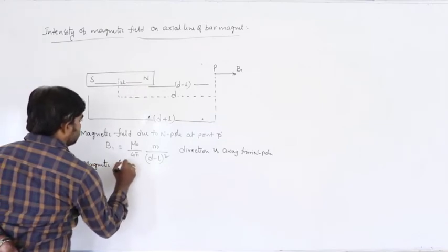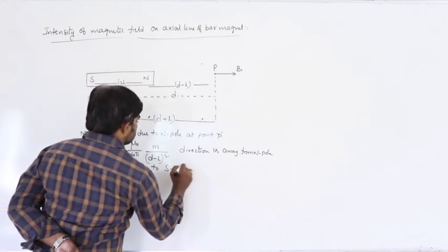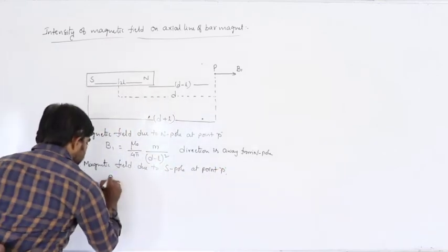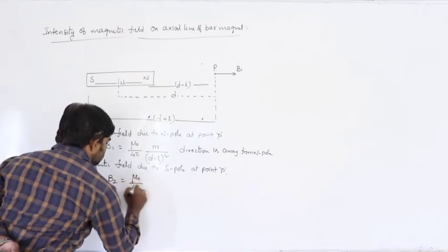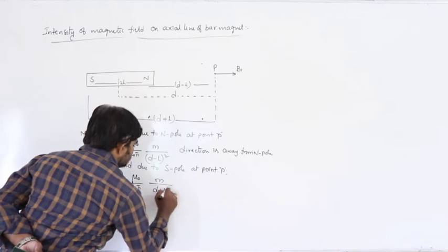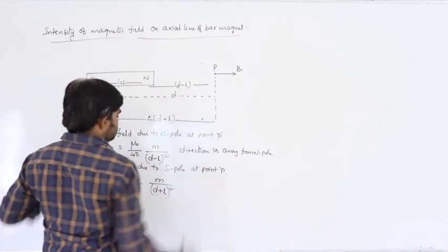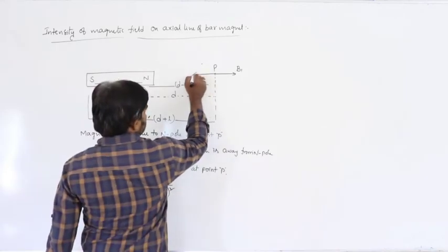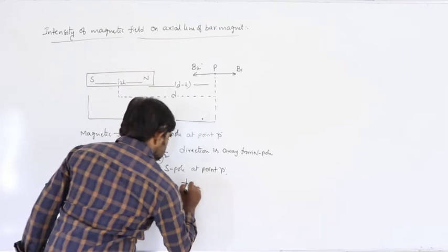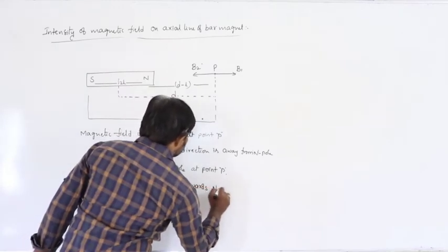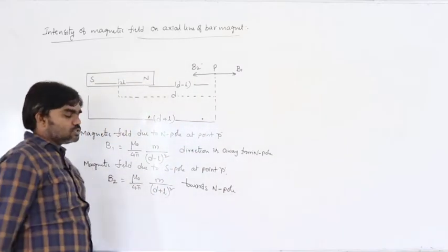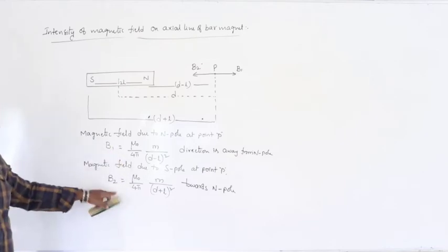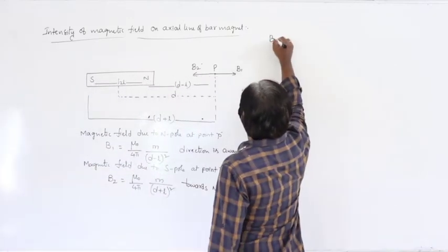The magnetic field due to the south pole at point P is B₂ = μ₀/4π × m/(d + l)². The direction: south-north attraction means B₂ points towards the south pole, i.e., towards the north pole end. Since B₁ and B₂ are in opposite directions, the net magnetic field is B_net = B₁ − B₂.